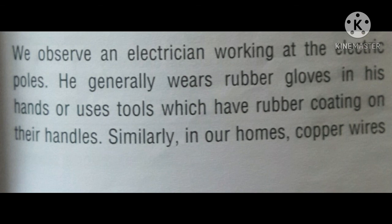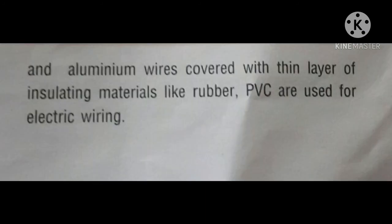We have observed electricians working at electric poles. They generally wear rubber gloves or use tools which have rubber coating on their handles. Similarly, in our homes, copper wires and aluminum wires covered with a thin layer of insulating material like rubber or PVC are used for electric wiring, so that we can use these wires easily without getting electric shock.